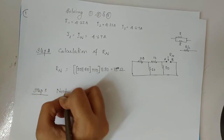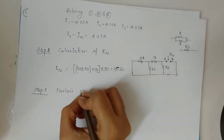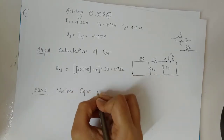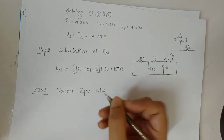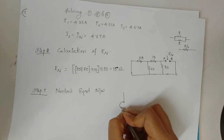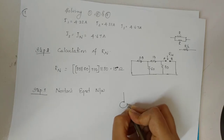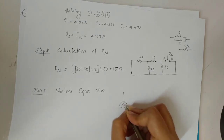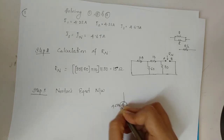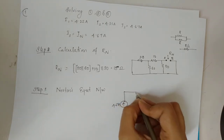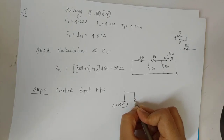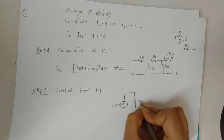Step 3 is the Norton's equivalent diagram. Drawing the Norton equivalent network through RL: we have Rn equal to 15 ohms in parallel with the current source IN.